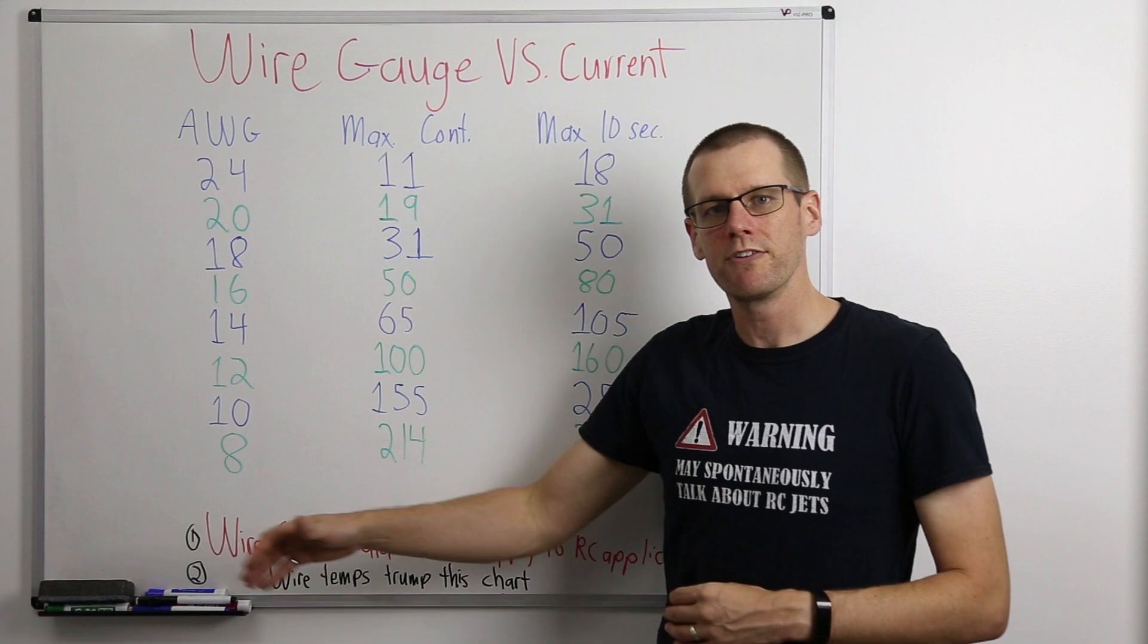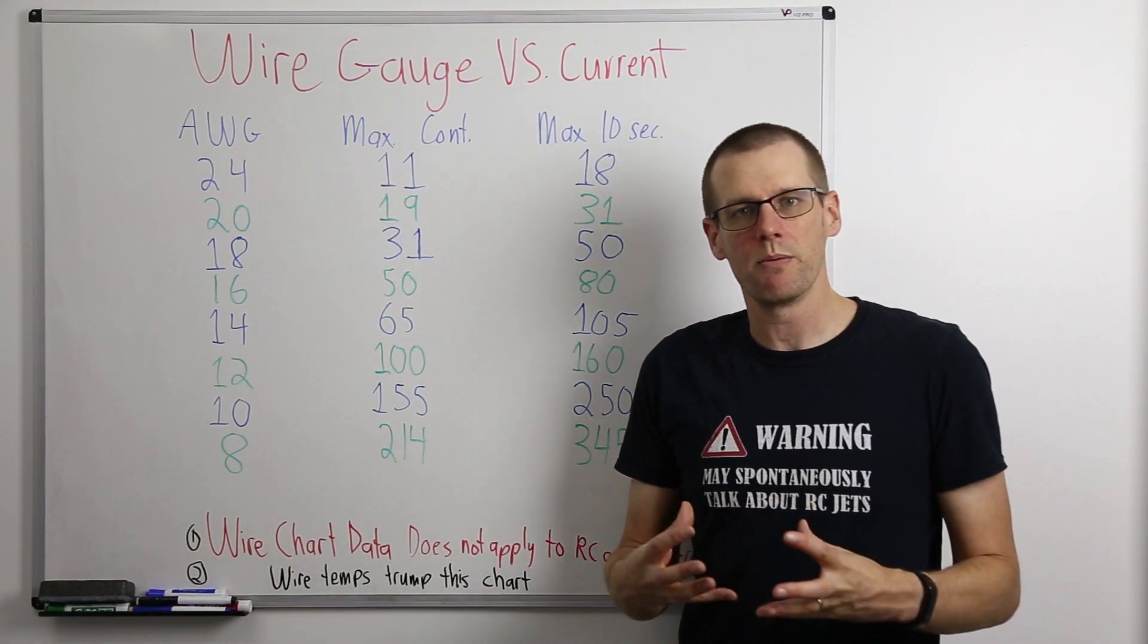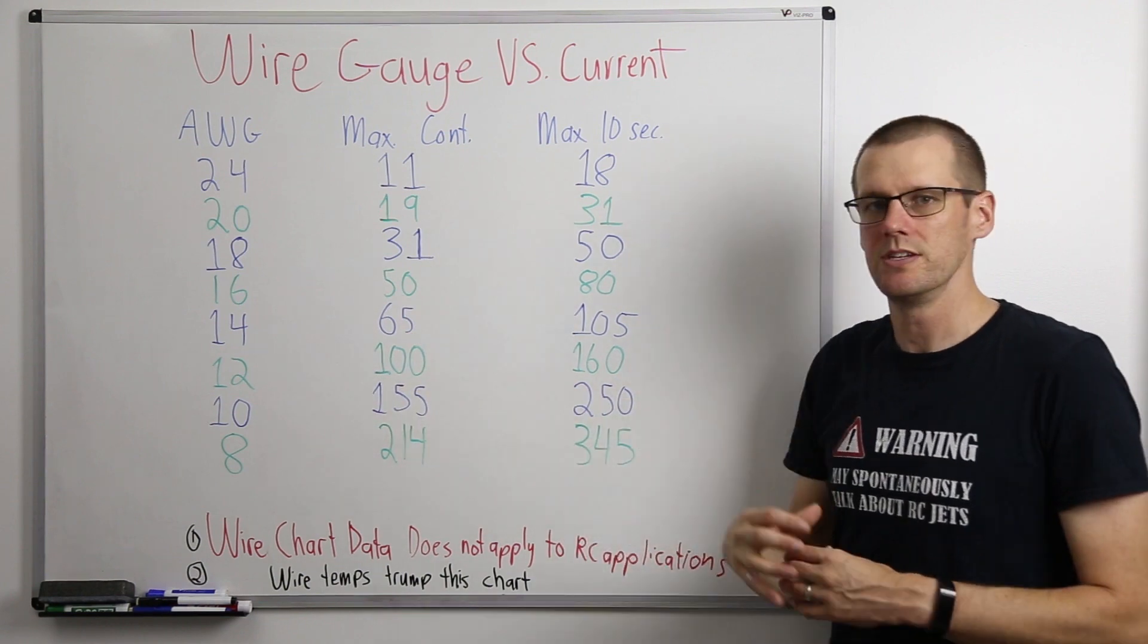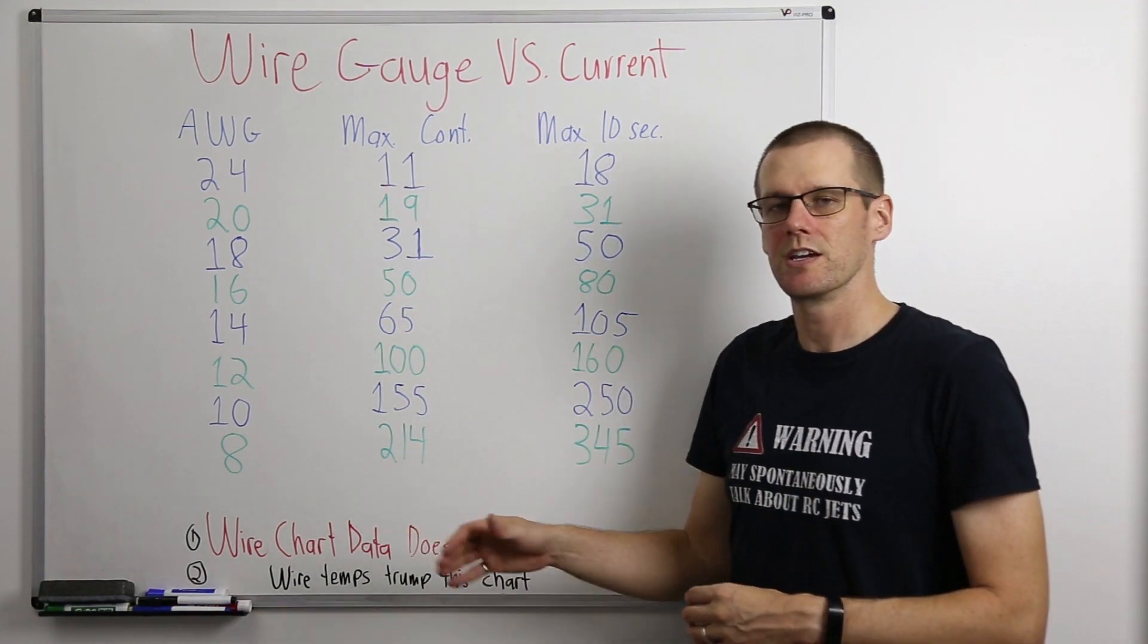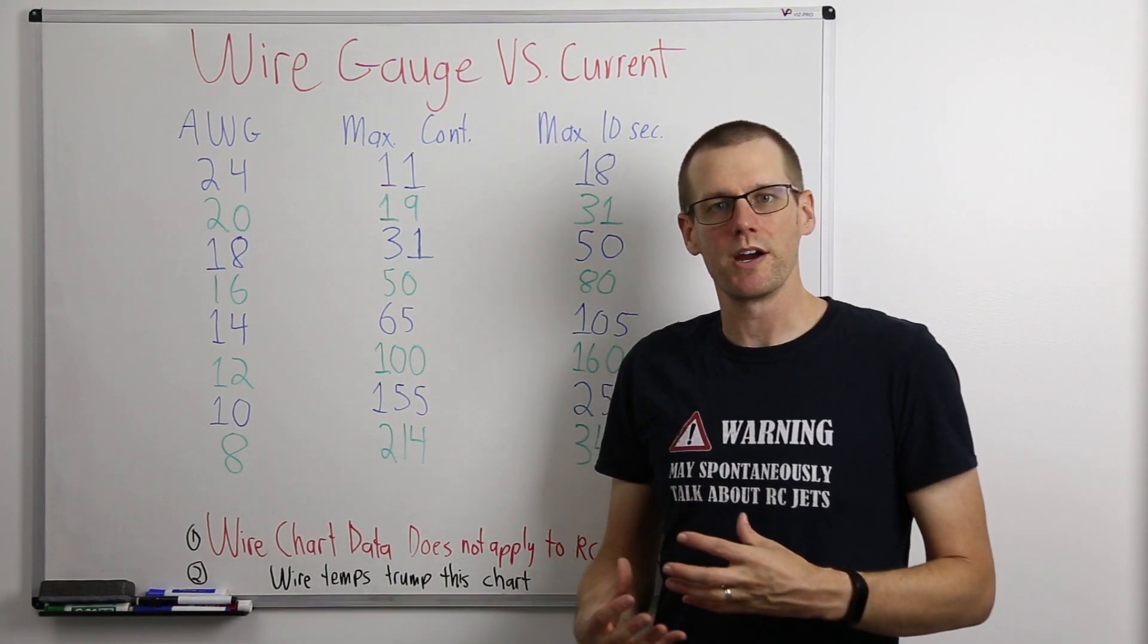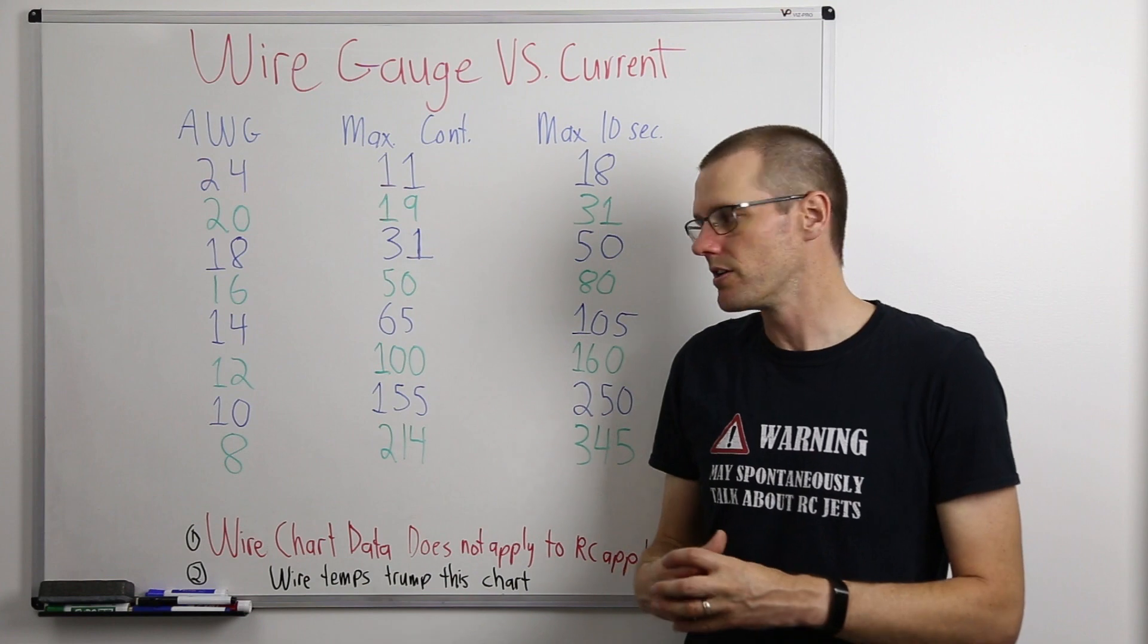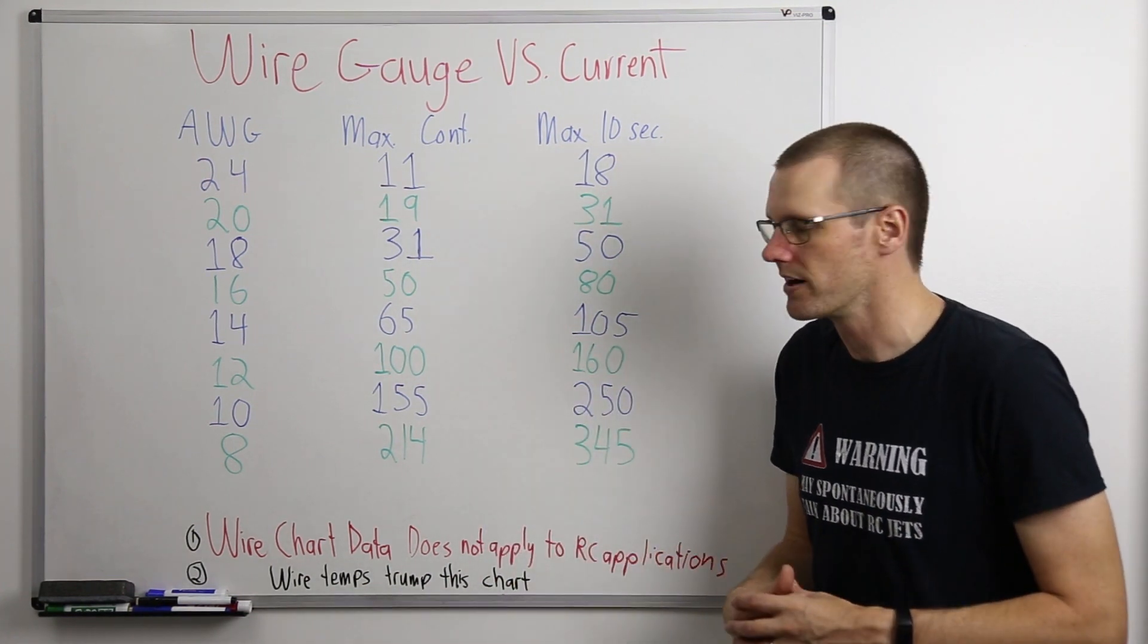And then the last point that we have here up on the board is that wire temperatures will trump any of this data that you see here on the board. So something to keep in mind is that if you're seeing high significant temperatures within any of the wires on your radio controlled vehicle, you should probably move up to the next thicker gauge of wire.